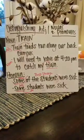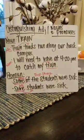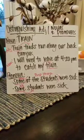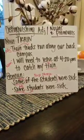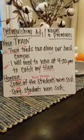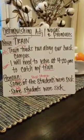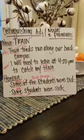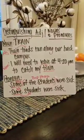In the first sentence, it says 'train tracks run along our back campus.' In this sentence, the word 'train' is functioning as an adjective because it's telling the reader what type of tracks run along the back side of the campus. So 'train tracks' is what runs along our back campus.